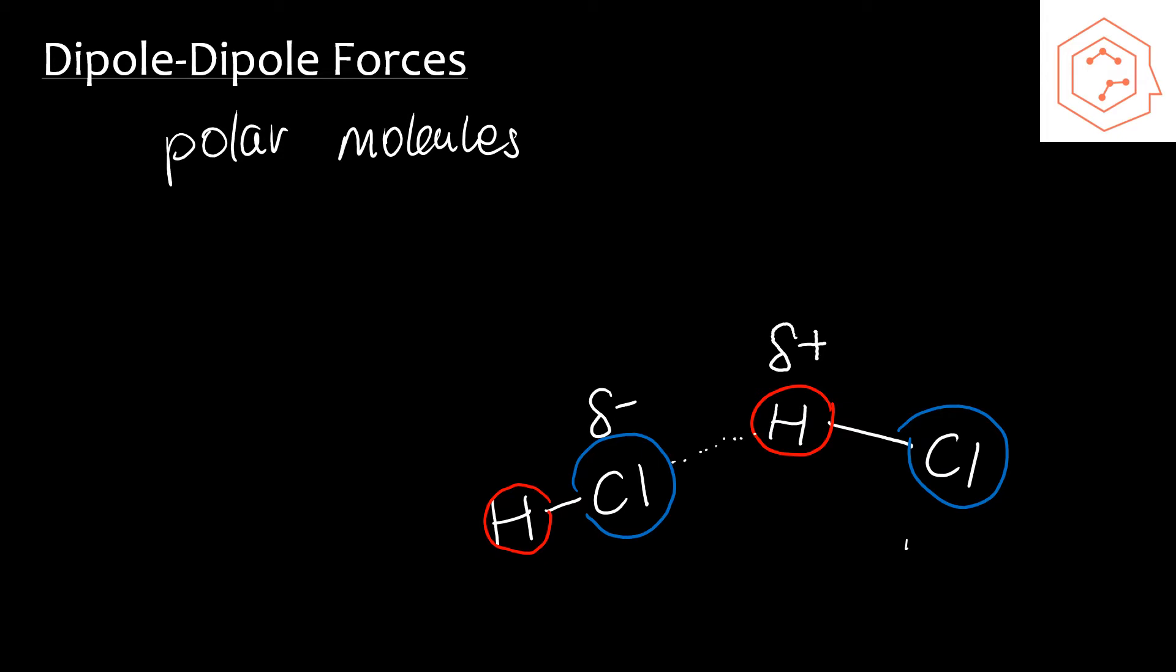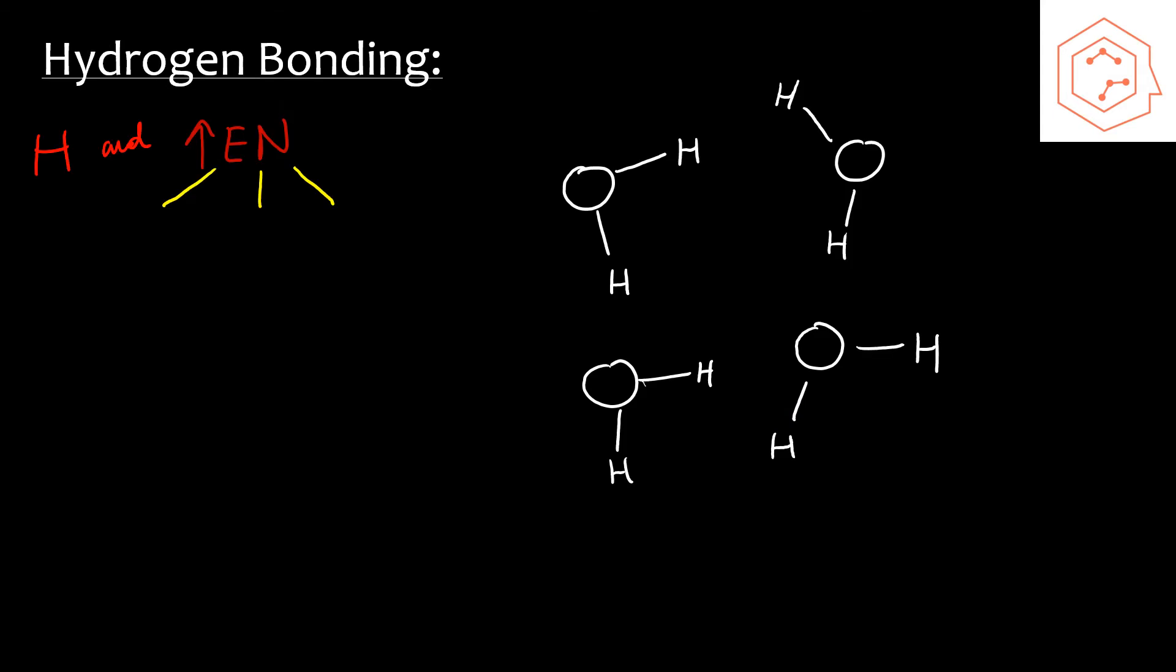Hydrogen bonding is the strongest of the three intermolecular bonds. It occurs between a hydrogen of one molecule and a very electronegative atom of another neighboring molecule, which includes fluorine, nitrogen, and oxygen.